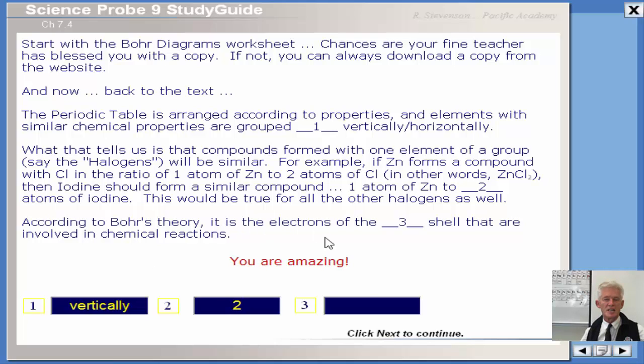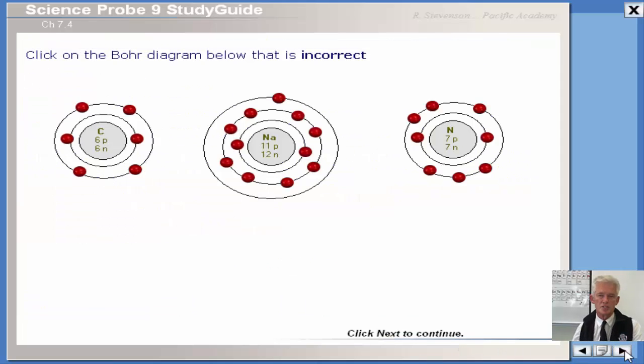So according to Bohr's theory, it is the electrons of that outermost shell that are involved in chemical reactions. Eventually, in your next year of chemistry, you will discover you don't actually have to draw these full Bohr diagrams. You can draw lovely little Lewis diagrams where you can just show these valence electrons or these outermost shell electrons. But they are the most important electrons in the sense that they're the ones that are involved in the chemical reaction.